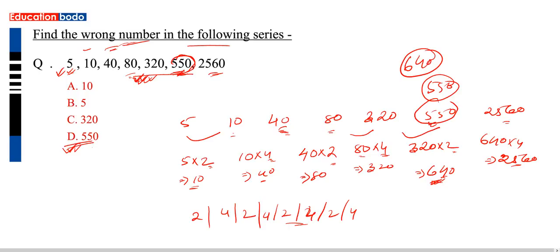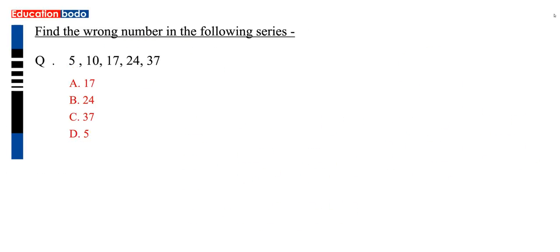So if you want to use the reasoning level, then you can practice this. If you want to use the next question, question number 2: we have 5, we have 10, 17, 24, 37. Right? That's 25.